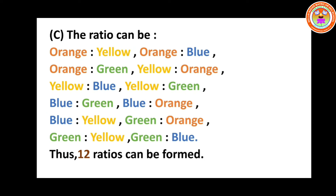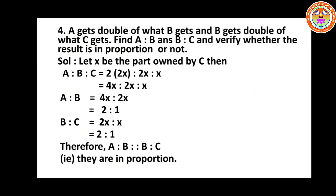Option C: how many different ratios can be formed from four colors? Take orange with yellow, blue, and green; then yellow with orange, blue, and green; then blue with green, orange, and yellow; then green with orange, yellow, and blue. Totally there are 12 ratios that can be formed among these four colors. Problem three is over.